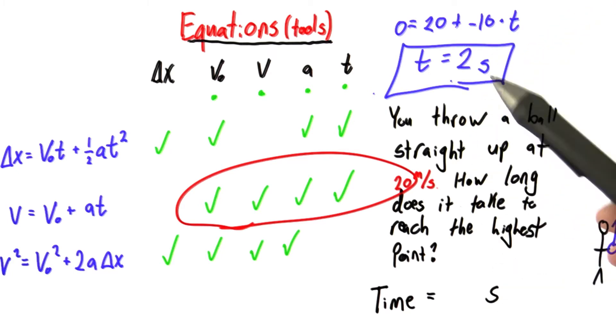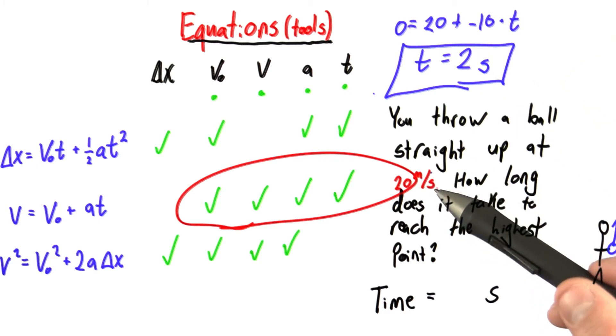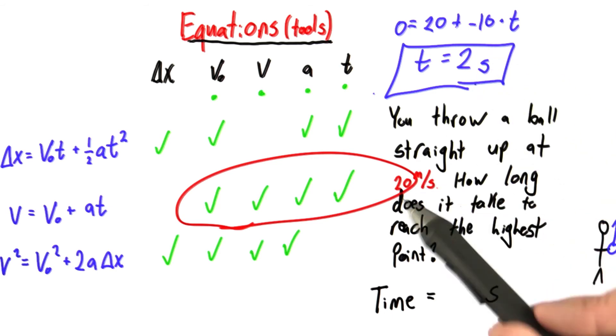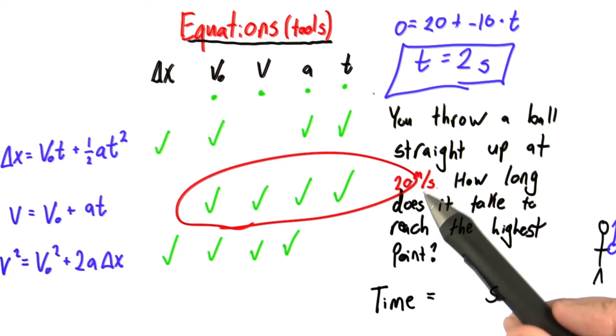We know the acceleration due to gravity is 10 meters per second per second. If I start off with a velocity of 20 meters per second going up, I'm going to lose 10 meters per second every second. So it's going to take 2 seconds for this velocity to go down to 0, and that's the top of my trajectory.